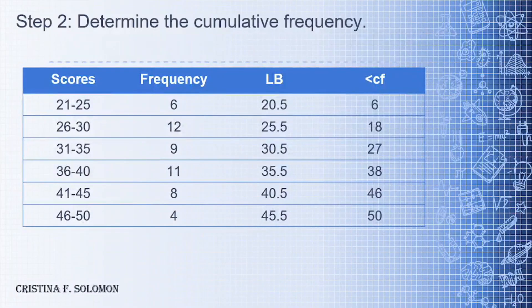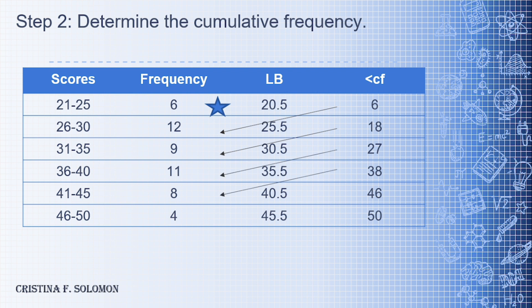The next step is to determine the cumulative frequency. We start with the first frequency, which is 6, and then proceed with successive adding: 6 + 12 = 18, 18 + 9 = 27, 27 + 11 = 38, 38 + 8 = 46, and 46 + 4 = 50. Our last cumulative frequency is equal to the total population.